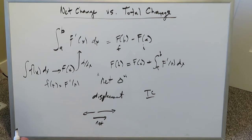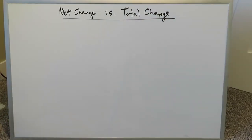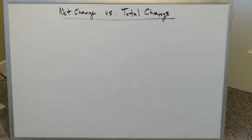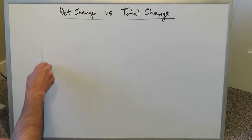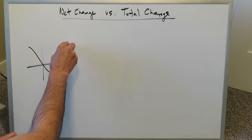The total change represents exactly what happened from start to end — regardless of direction. The total movement or total effect on the system is your total change. The easiest way to differentiate between net change and total change is by means of a graph.